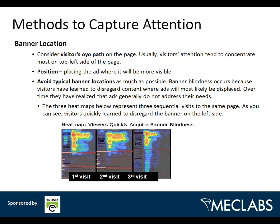One thing we talk a lot about is banner blindness. We've been on the web for many years and we know where the banners are — many times those banner ads do not fulfill a need we have, so we ignore them. In this heat map study, on the first visit you can see where the banners are with a little bit of attention paid, but primarily people are getting their content, headlines, and information from the main area. Interestingly, an ad that changed is still ignored — people expect it to be in that spot. So if you have a website and you want to get those banners working better, move them around.